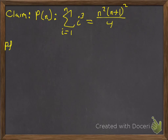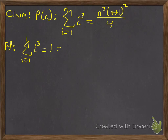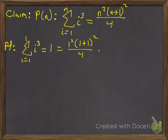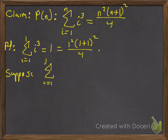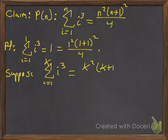Again, we've got to show this is true for i equals 1. What is 1 cubed? That's 1. Does it fit the formula? We have 1 squared times (1+1) squared over 4, which is 1 times 4 over 4, equals 1. So the base case is true. Now we'll suppose that for k, the sum from i equals 1 to k of i cubed equals k squared times (k+1) squared all over 4.